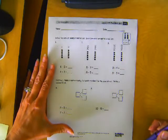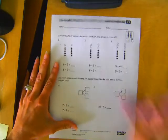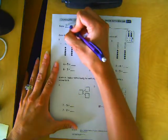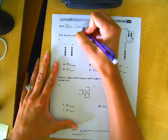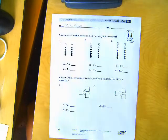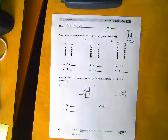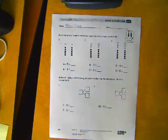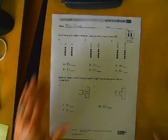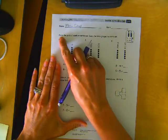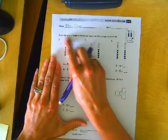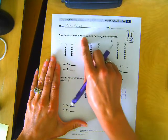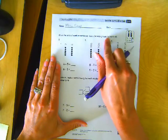Name on your paper. First thing. Reading fingers ready, let's read the directions. Solve the sets of number sentences. Look for easy groups to cross off.